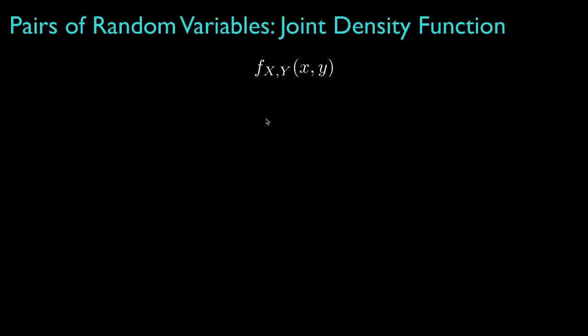Well, the joint density function for a pair of random variables is a natural extension of the density function for a single random variable. That is, it's a non-negative function that must integrate to one.